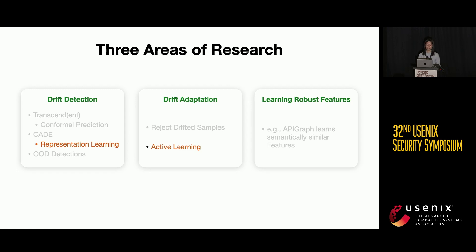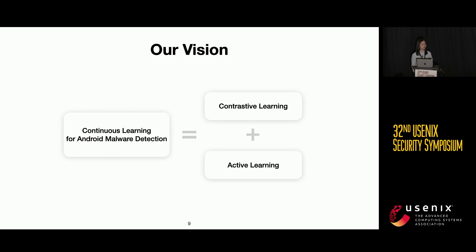In our paper, we focus on the drift adaptation technique of active learning. To do active learning better, we are inspired by representation learning literature and propose a new idea for more robust representation learning. We propose two ideas: a new robust representation learning technique for contrastive learning, and a better way to do active learning. In slogan form, our vision for continuous learning for Android malware detection is contrastive learning plus active learning. Due to time, I'll briefly cover one new idea for contrastive learning and leave the other for the paper.